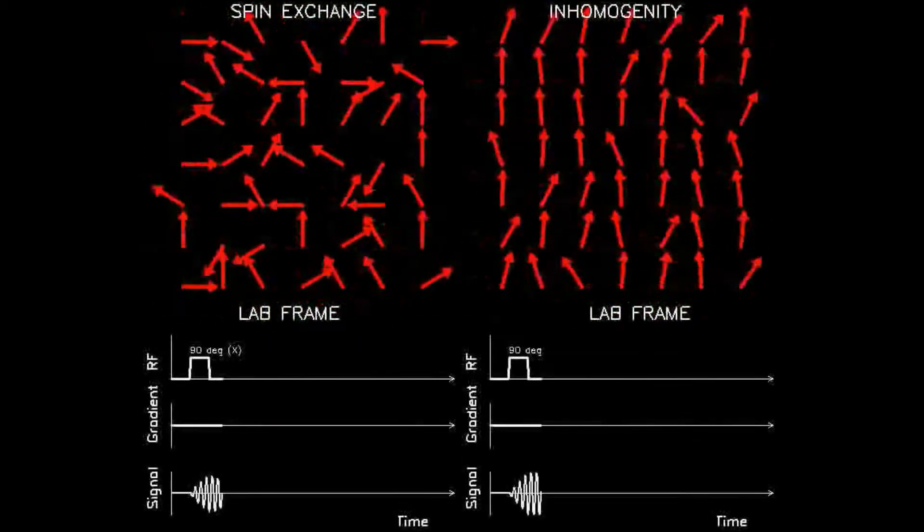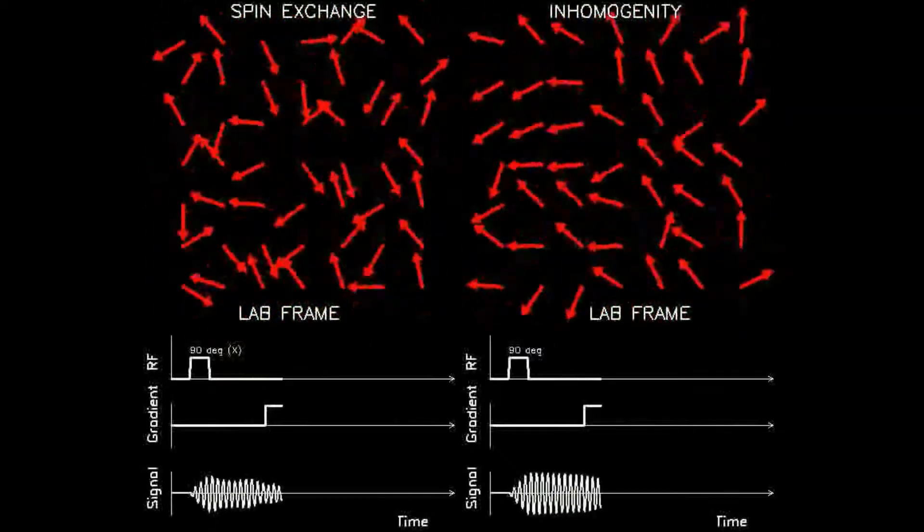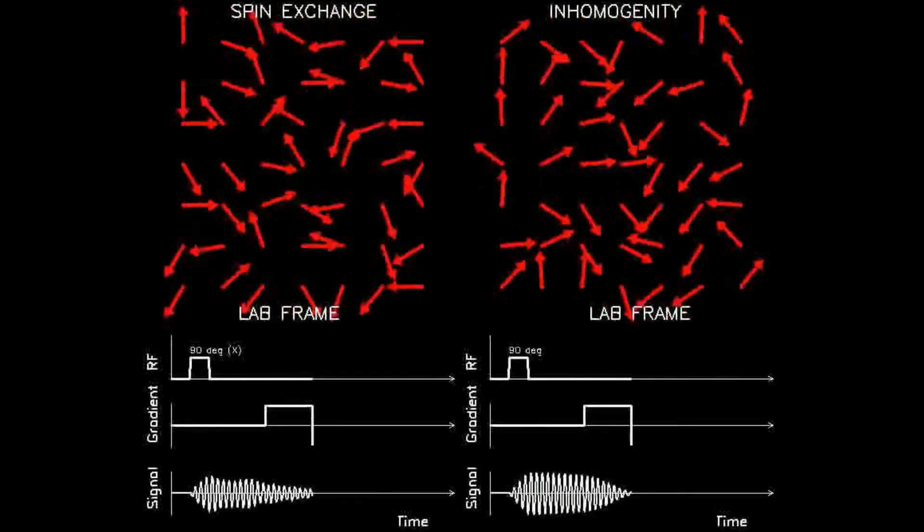Notice that when a gradient is applied, as shown by the plateau in the line graph labeled gradient, the rotating red arrows begin to dephase very quickly.